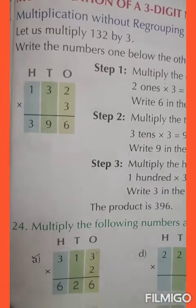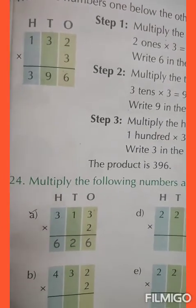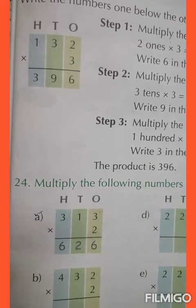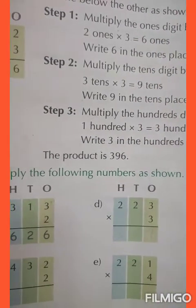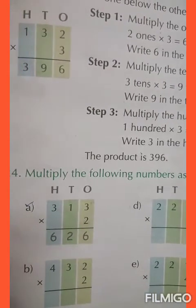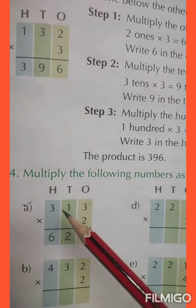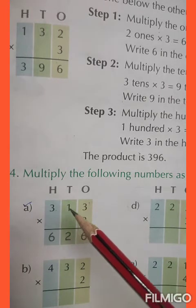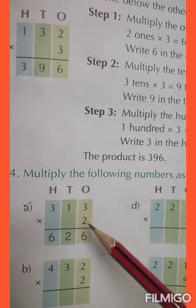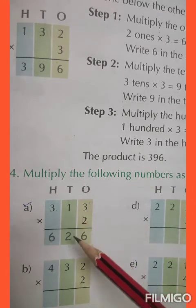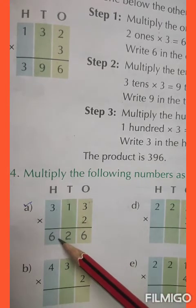You have to multiply here without carrying over. Let us start with question number 24: multiply the following numbers as shown. You have to multiply 313 by 2. So, 2 threes are 6, 2 ones are 2, and 2 threes are 6.